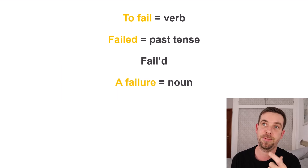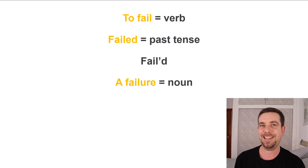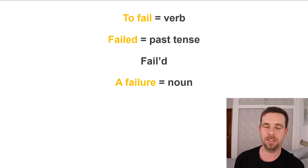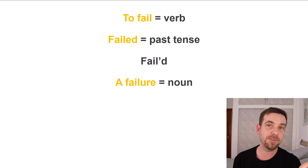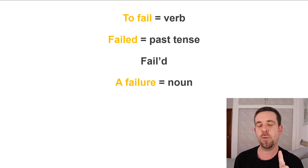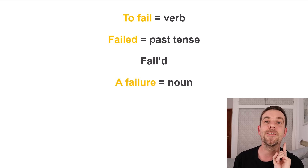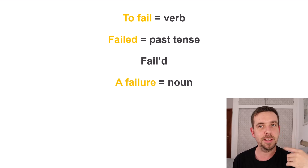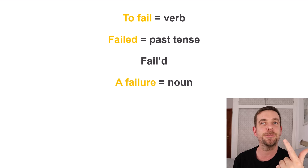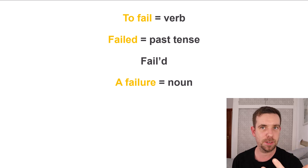For the failure vocabulary: to fail is a verb, the past tense is failed, and the noun is failure. Pronunciation: fail, failed, failure. Note — failed does not exist as a separate form beyond past tense. If it's a little difficult, listen and repeat: fail, failed, failure.